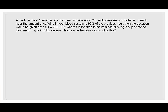In our first example, we're told that a medium roast 16-ounce cup of coffee contains about 200 milligrams of caffeine — we're going to say 200 milligrams. If each hour the amount of caffeine in your bloodstream is 90% of the previous hour, then the equation would be: caffeine as a function of time is 200 times 0.9 to the t, where t is the time in hours since drinking a cup of coffee.